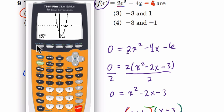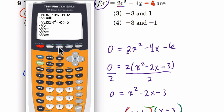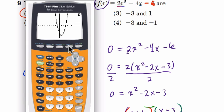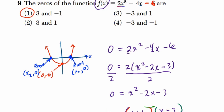So it gives you the zeros. All I did was go to y equals, enter my equation, graph it, and then hit second trace to find the zero command. Hope this helped. Thank you.